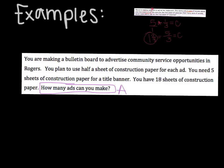Step number two — read and underline the important information, including labels. You are making a bulletin board to advertise community service opportunities in Rogers — no important information there. You plan to use half a sheet of construction paper for each ad. There is an important word here: 'half.' That's a number in word form, and the label is a sheet of construction paper. You need five sheets of construction paper for a title banner — that's important. And then you have 18 sheets of construction paper — 18 sheets. I'm also going to underline 'title banner' to go with that five sheets.